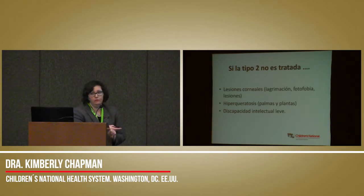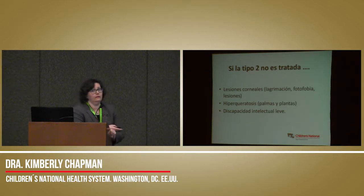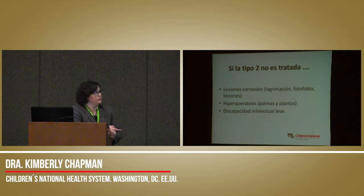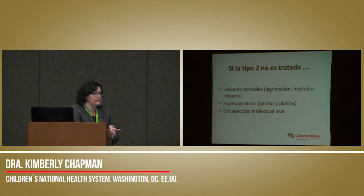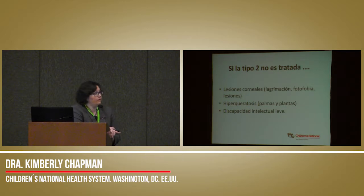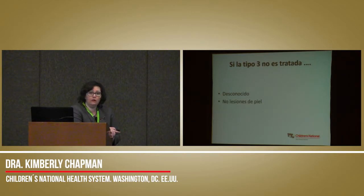Stepping away from type 1 briefly — type 2 will help us understand the therapeutics of type 1 later. In type 2, patients get predominant corneal lesions, eye disease, and photophobia. They also get thickening of skin on their hands and feet and can have intellectual difficulties, though usually have normal intellect. Type 3 does not appear to cause disease at all — these individuals do not appear to have significant dysfunction.